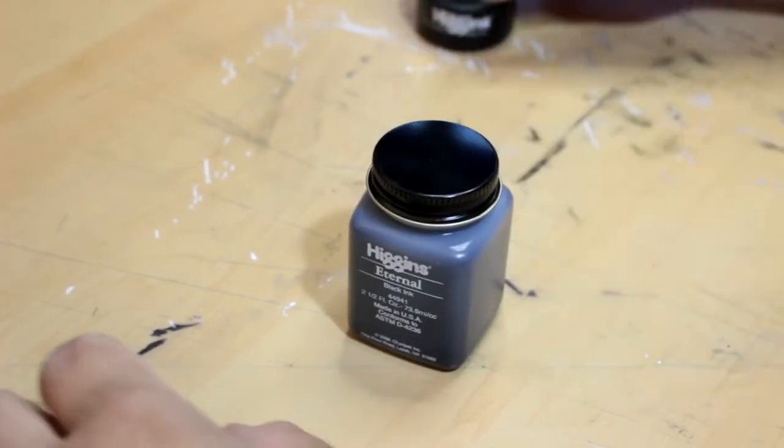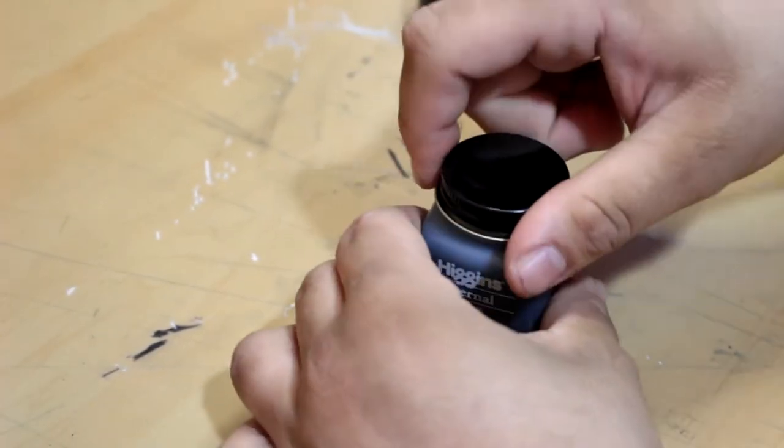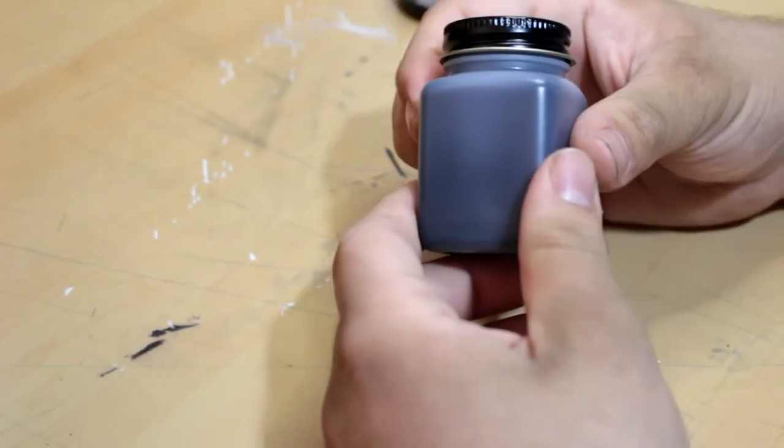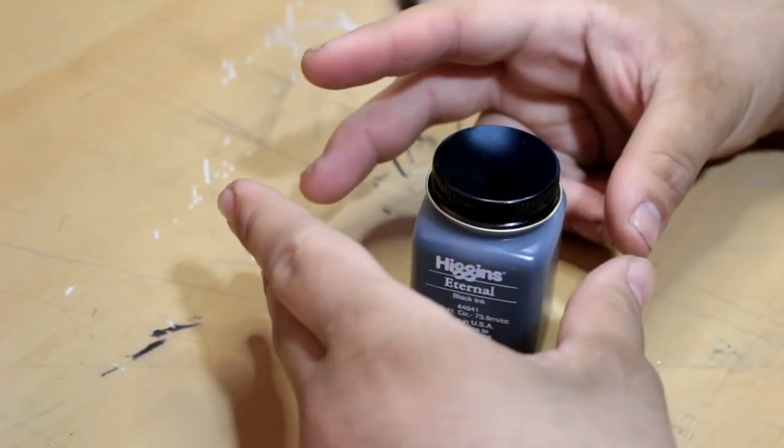If we open it up and you can see the bottle, it's quite different from the normal Higgins bottle. And again, Higgins is one of those iconic brands where when you see this shape you think Higgins. Here this is very different - it is essentially just kind of like a little jar, almost like a jar of honey.